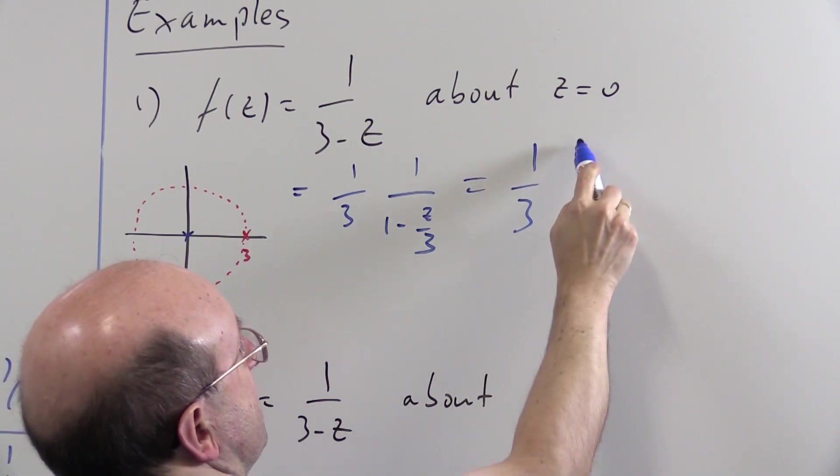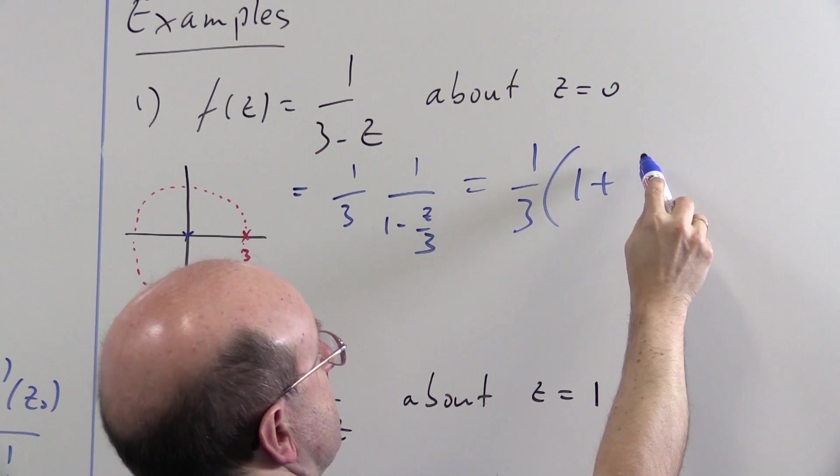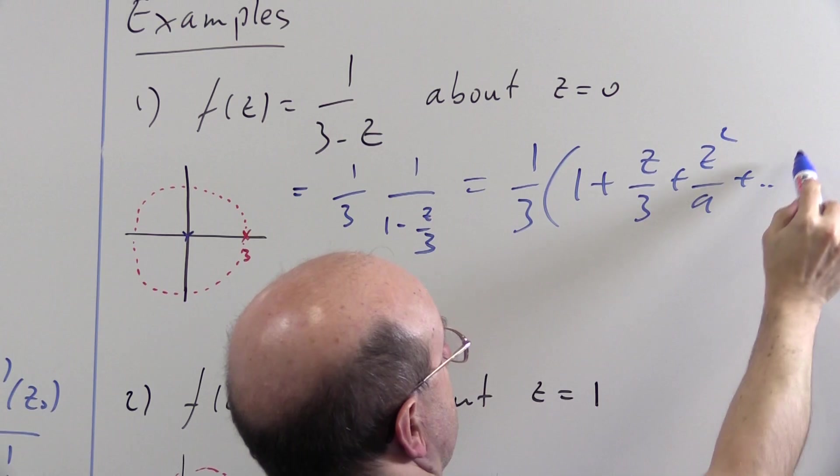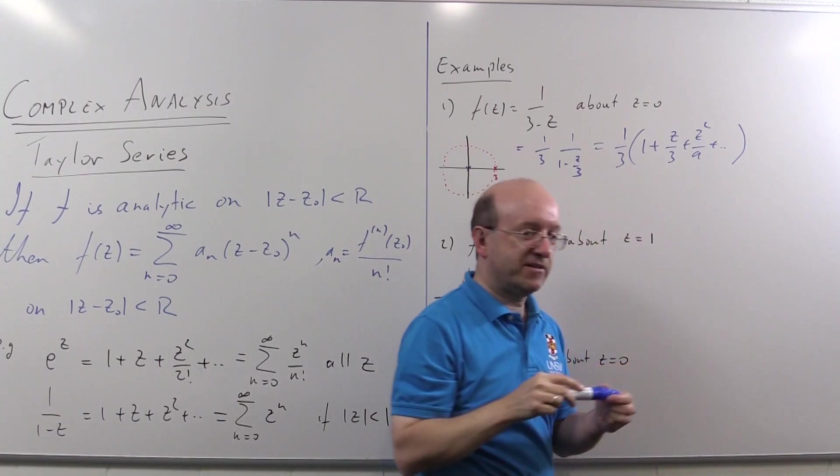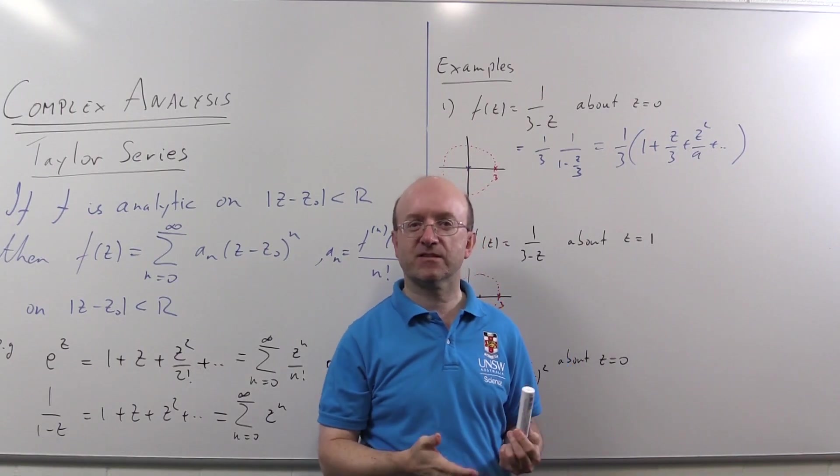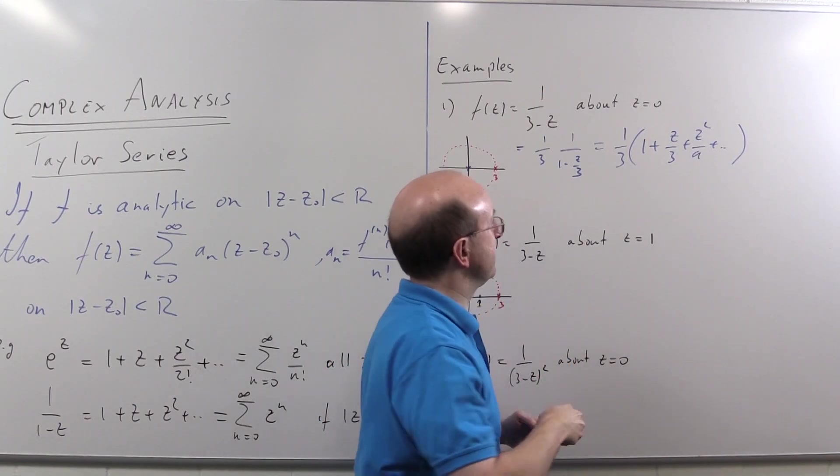What do we get? One third times one plus z over three plus z squared over nine plus and so on. And it's useful to write down the clause. Where does this series converge?